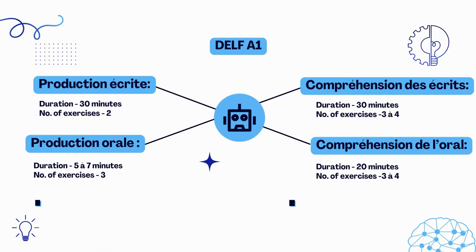For the Compréhension Écrite, the reading section, you will be getting 30 minutes and the number of exercises is between three to four. For Compréhension Orale, the listening section, the duration is 20 minutes and you will be getting three to four exercises. Now let's look at the exam pattern of DELF A2. The first section, Production Écrite, has a duration of 45 minutes.